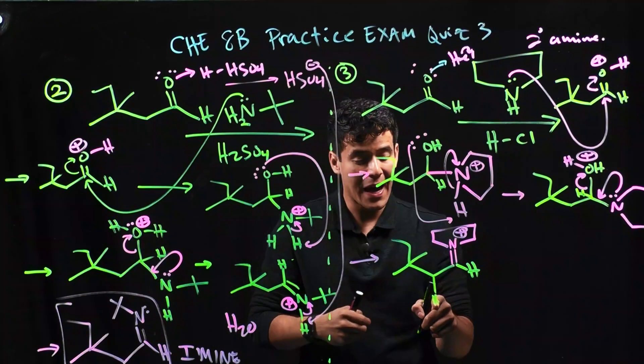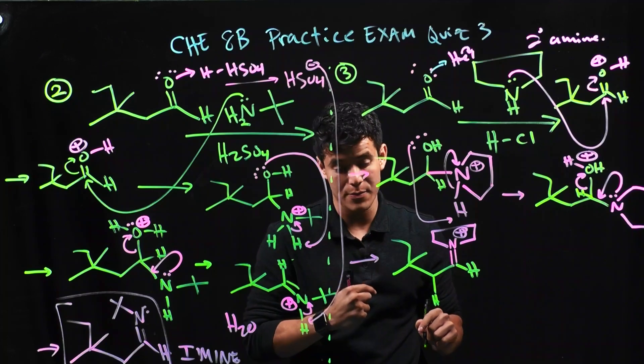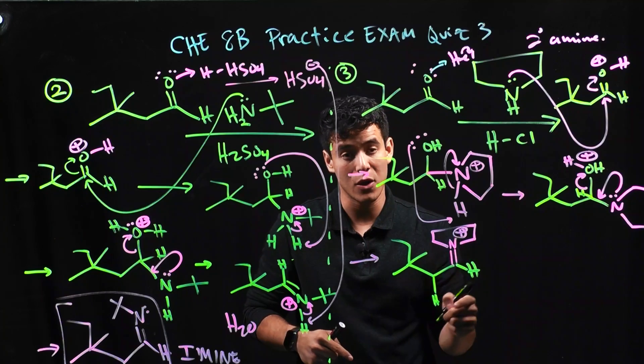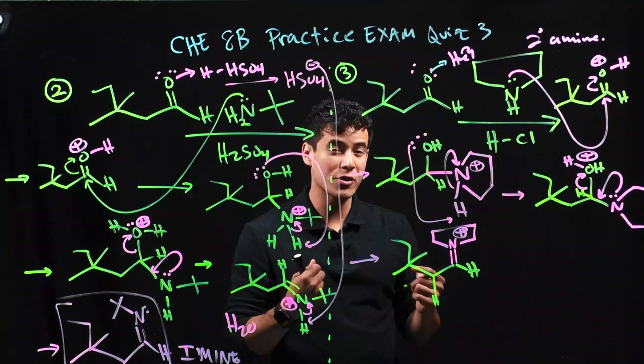So, I can actually snag a proton from our alpha spot and form a double bond and push up the pi bond onto a lone pair on the nitrogen. I'll go ahead and show you what I mean.